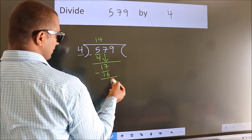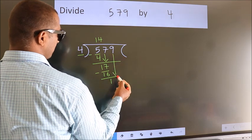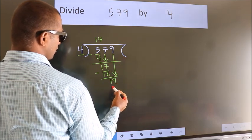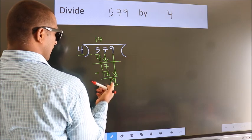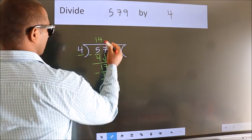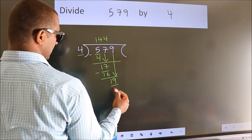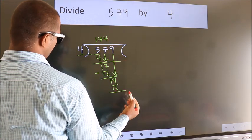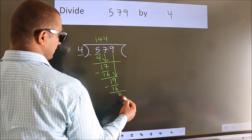After this, bring down the beside number. So, 9 down. So, 19. A number close to 19 in the 4 table is 4 fours 16. Now, we subtract. We get 3.